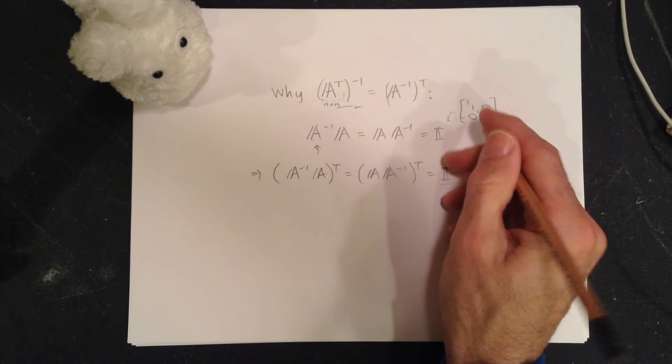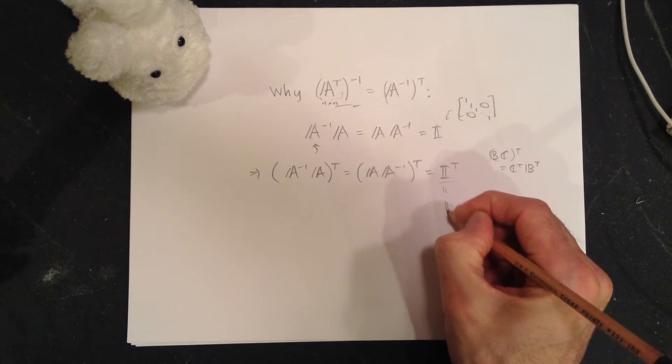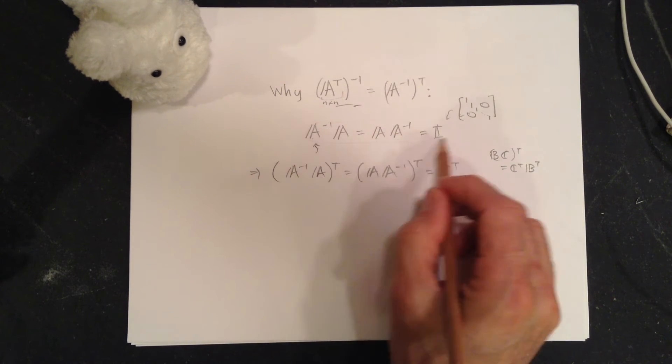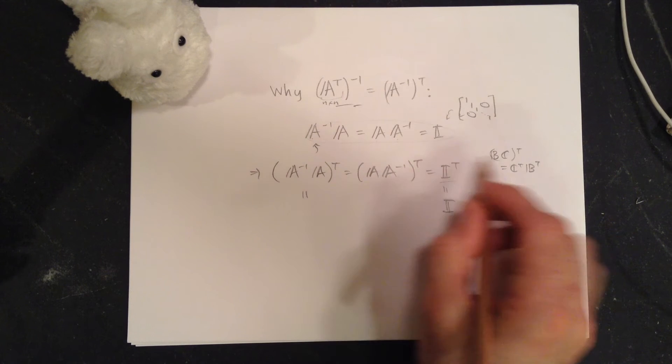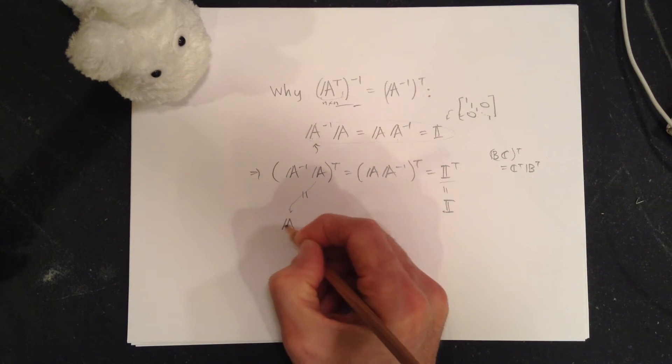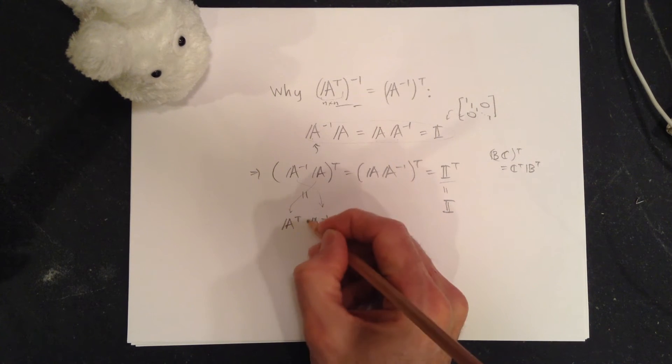Transpose of any diagonal matrix is itself, so that's good. We're starting to construct another equation like this. We're going to use this rule here, so the A goes to the front, and we put a transpose here. We have A^(-1) here, transpose.